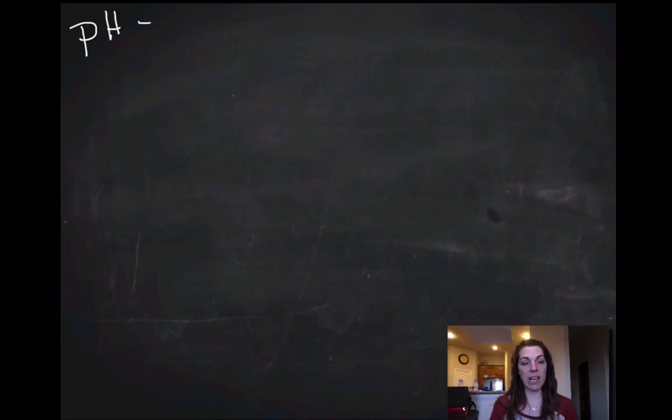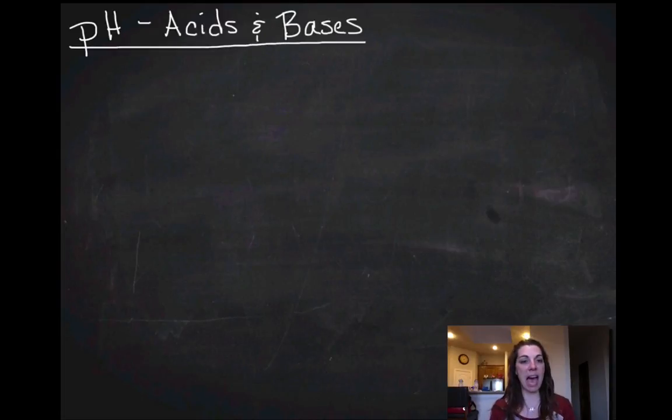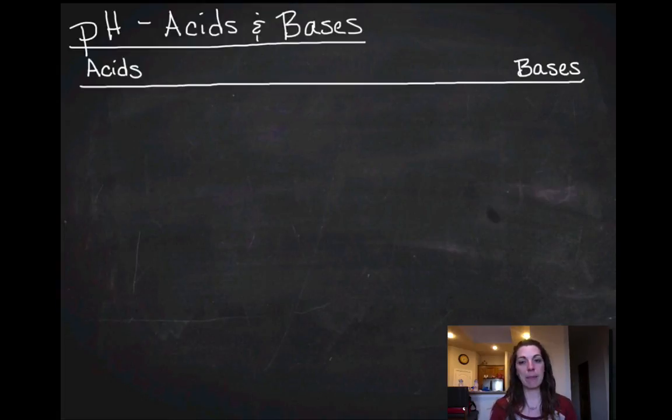The last thing that we want to talk about with water and solvents and dissolving is pH and specifically acids and bases. So this is review, and it's going to be short review. Acids, bases, pH scale. So 0 to 14 with neutral in the center.